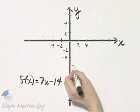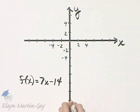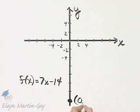So zero left to right 2, 4, 6, 8, 10, 12, 14. Let me write this down for you. x is zero, f of x is negative 14.